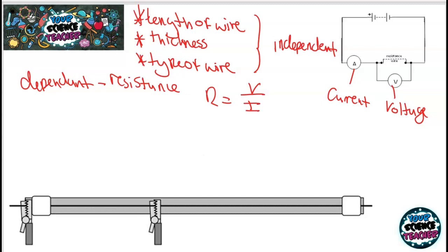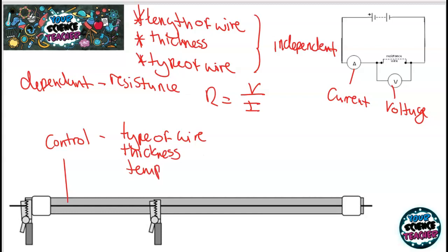In one example, you change the length of the wire using crocodile clips to investigate how length affects resistance. To do this fairly, you need to control the other variables — keeping the type of wire and thickness the same. One thing you can't easily control is temperature, which also affects resistance. As the practical goes on, the wire gets really hot because resistance causes heat, and the higher the temperature, the more resistance you have in the wire.